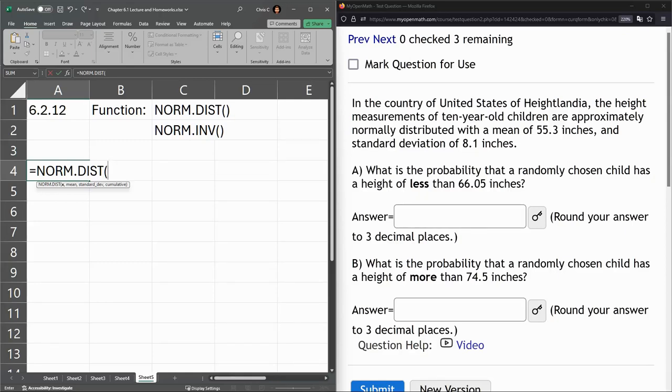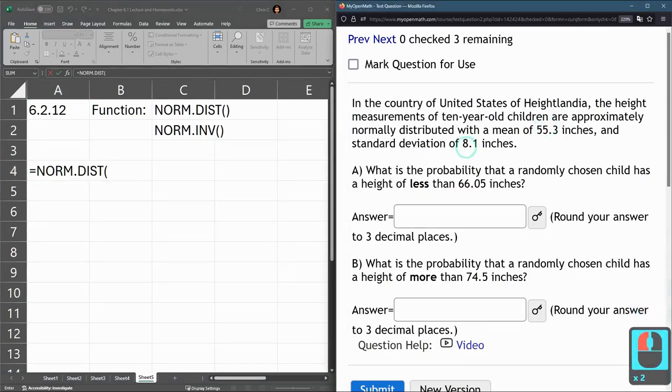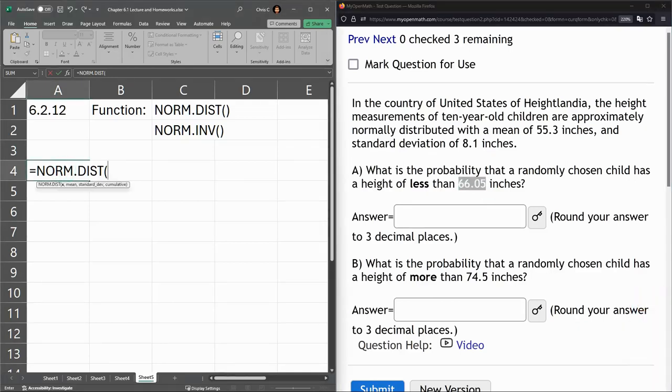Now in this problem, let's see, the first number, 55.3, is the mean. The standard deviation is 8.1. And in part a is finally where we see the value, right here, 66.05. So that's x. So that's the value we want. And this distribution function is going to return the heights, the probability that height is less than this value. So that's exactly what we want here.